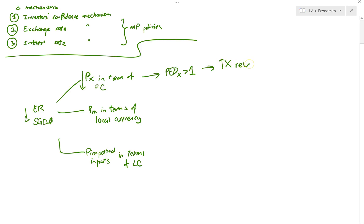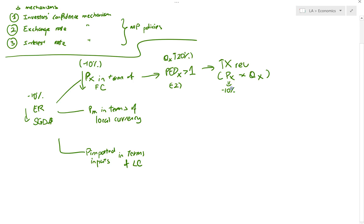Export revenue is price of exports times quantity of exports. For example, if the exchange rate goes down by minus 10%, all things equal, the price of exports goes down by minus 10%. Assuming a PdX of exports of 2, the quantity of exports will go up by 20%. So price of exports at minus 10% and quantity at plus 20% means export revenue goes up by plus 10%.